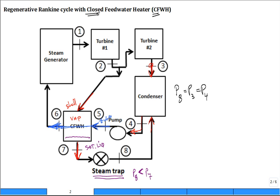The pressure at 6 and the pressure at 1 are equal — the steam generator adds heat but doesn't change the pressure. Likewise, all inlets and exits from the condenser have essentially the same pressure. To throw out some numbers: a high pressure of 10 megapascal, an intermediate pressure of 1 megapascal, and a low condenser pressure of 10 kilopascal — you would know that the steam trap needs to drop P8 all the way down to 10 kilopascal.